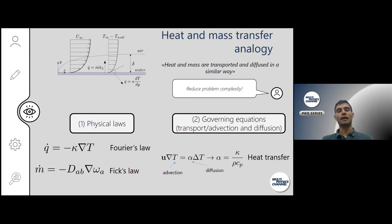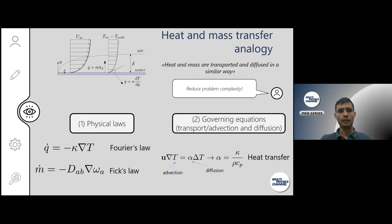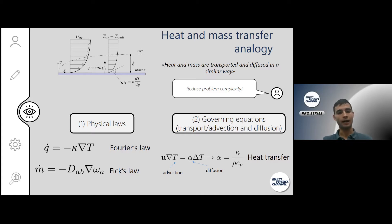This is a typical heat transfer problem where we have a heat exchange between the fluid flow and the solid element through convection. The physical law that governs heat transfer is called Fourier's law — it's basically the gradient of the scalar temperature times the conductivity, which gives us the heat flux. The mass flux is formulated in a very similar way using Fick's law, which expresses the gradient of mass concentration times a diffusivity constant.